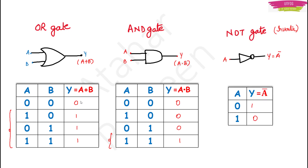Now for the NOT gate — it will have only one input because we are taking complement. So if input is 0, output will be 1, and if input is 1, output will be 0. The NOT gate gives you the inverse of the input, which is why NOT gate is also called an inverter. This can be asked as an MCQ: NOT gate can also be treated as an inverter.